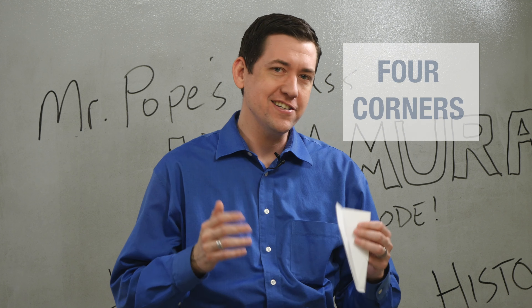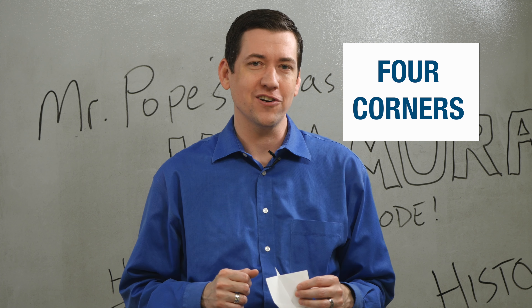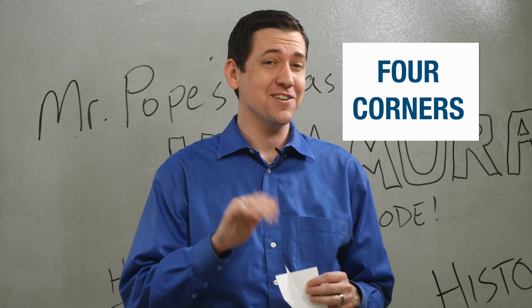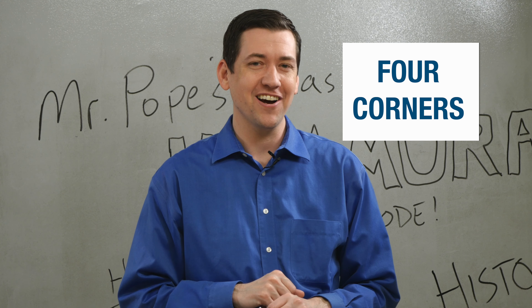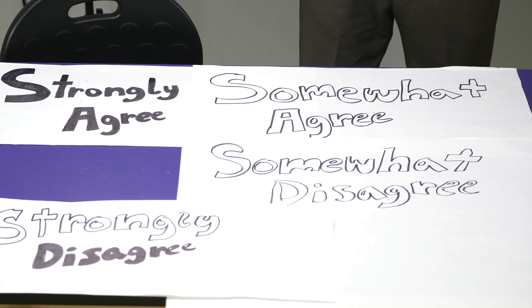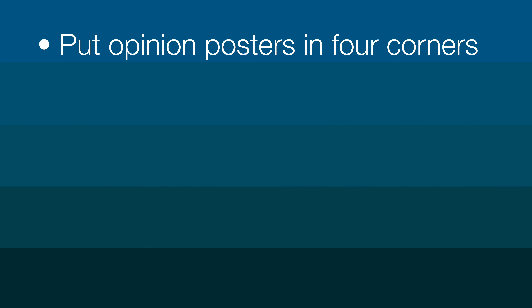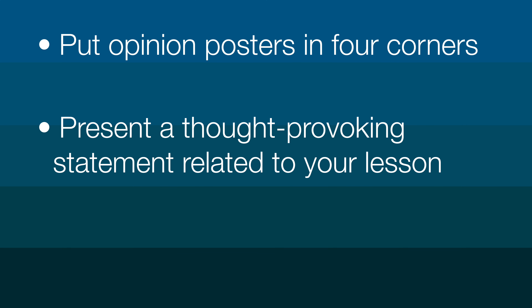This active engagement strategy is called Four Corners and it doesn't require a lot of hardware. All you need is four pieces of poster paper. Place them on or near the corners of your room, and they should read: Strongly Agree, Somewhat Agree, Somewhat Disagree, and Strongly Disagree.